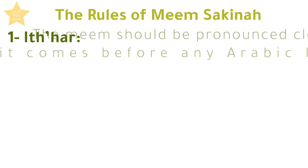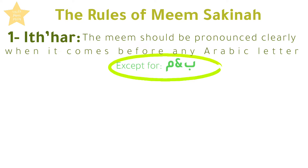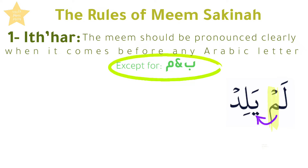The Meem should be pronounced clearly when it comes before any Arabic letter except for the letters Ba and Meem. Here we have Meem Sakinah followed by a letter that is not Ba or Meem. Therefore, we should pronounce it clearly.